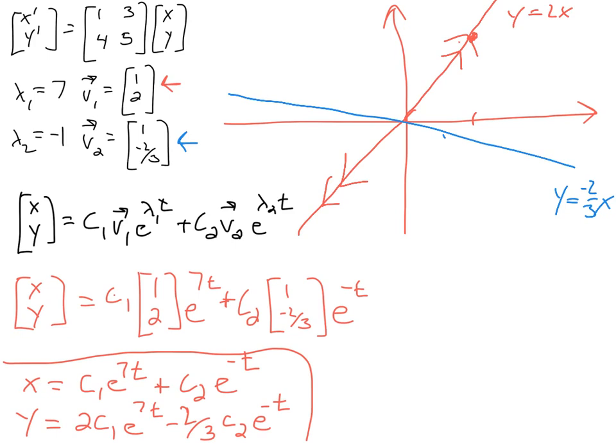If we start with an initial condition on this line, we're going to stay on that line. And since this had a negative eigenvalue, this one heads in toward the origin.